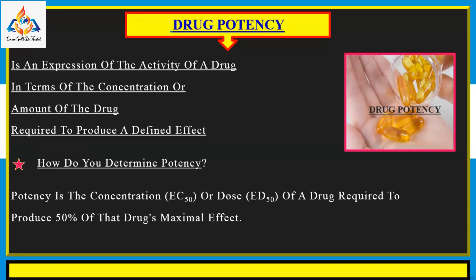Potency refers to the amount of drug, usually expressed in milligrams, needed to produce an effect such as relief of pain or reduction of blood pressure. For instance, if 5 milligrams of drug A relieves pain as effectively as 10 milligrams of drug B, then drug A is twice as potent as drug B.